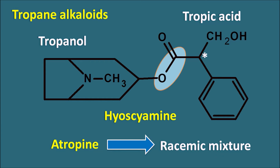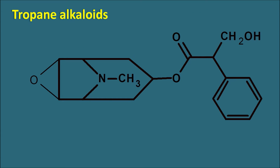Hyoscyamine is optically active, but atropine is not optically active because it is a racemic mixture — 50% L-hyoscyamine and 50% D-hyoscyamine. Hyoscyamine and atropine are important drugs that act as non-selective anticholinergics, blocking all muscarinic receptors. They are used as antispasmodics, to treat sinus bradycardia, and as pre-anesthetics to dry secretions.